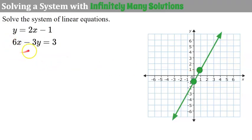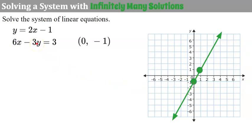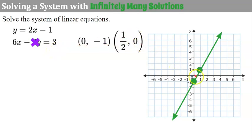The second equation is written in standard form, so I substitute 0 for x to find the y-intercept, which is (0, -1). That point is already plotted on our graph. I replace y with 0 to find the x-intercept: 6x equals 3, divide by 6, so x equals one-half. The point (1/2, 0) is already on the line. So we can see that these two equations are the same line.